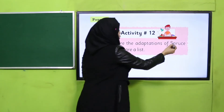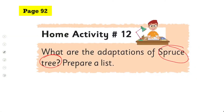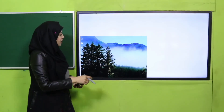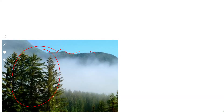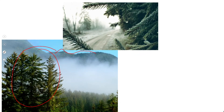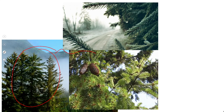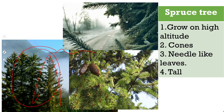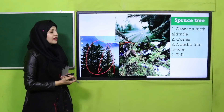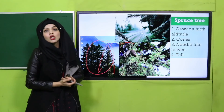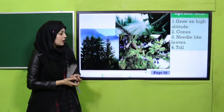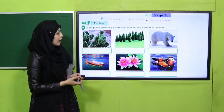Your homework for today: what are the adaptations of the spruce tree? This is another tree like the pine tree that also grows on high altitudes. The spruce tree grows in hilly and mountain areas, it also has needle-like leaves, cones grow on it, and its overall structure is cone shaped. Spruce tree adaptations: it grows on high altitudes, has cones, needle-like leaves, and they are extremely tall.